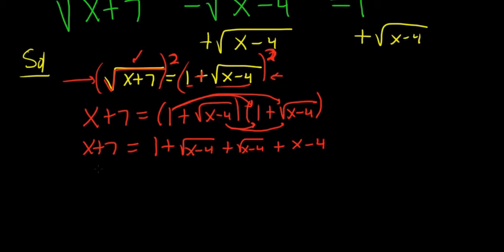So here we have x plus 7 equals, let's see, so 1 minus 4, that's negative 3. Then we have the x, so plus x. Then we have 1 square root of x minus 4, 1 square root of x minus 4. That gives us 2 square root of x minus 4.